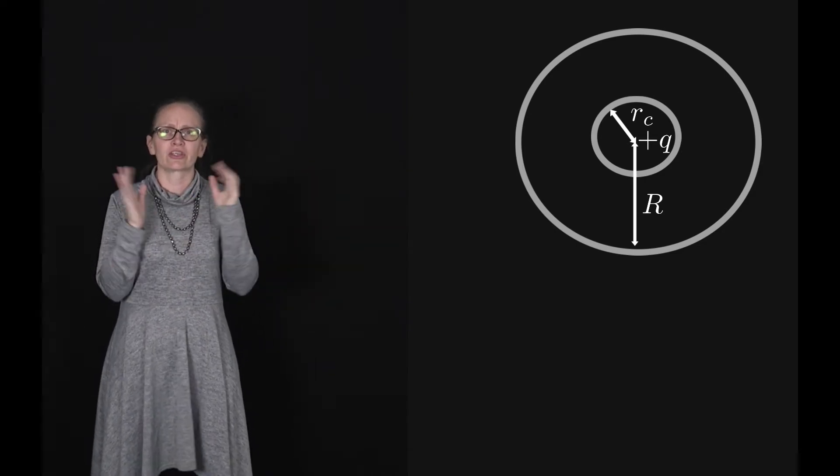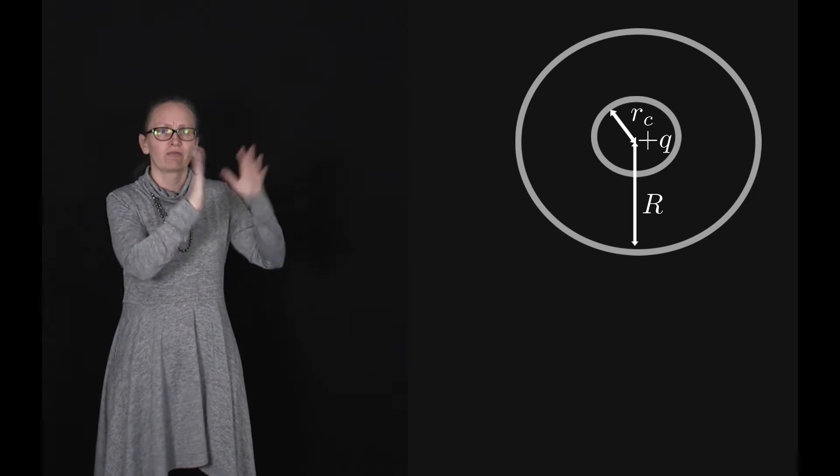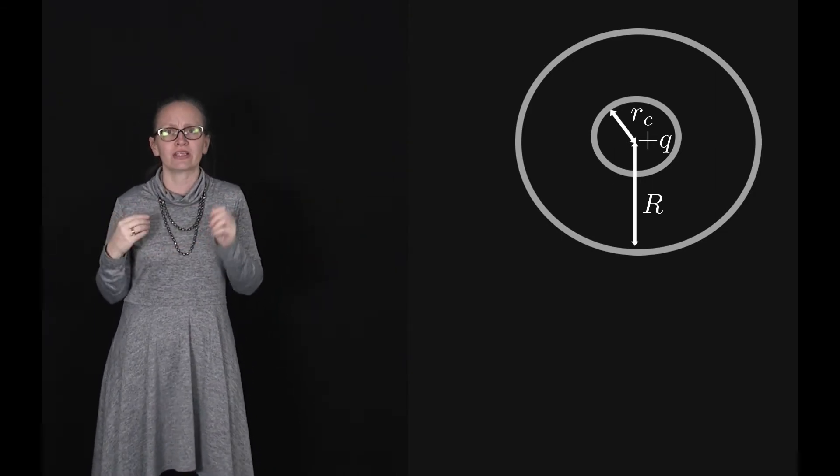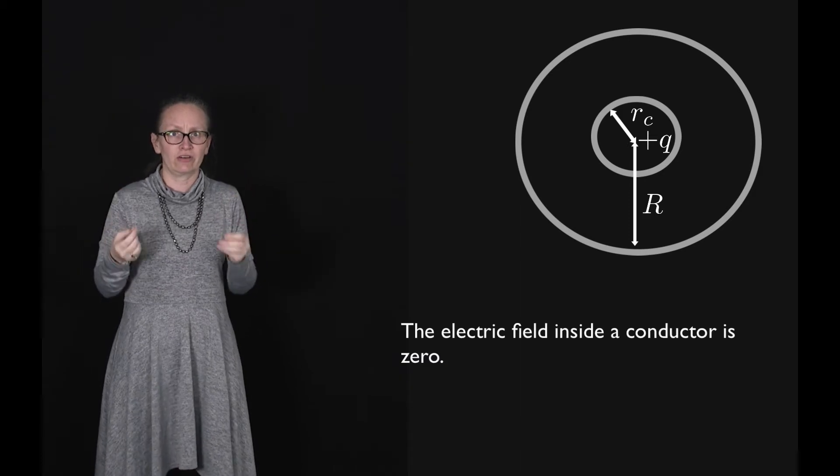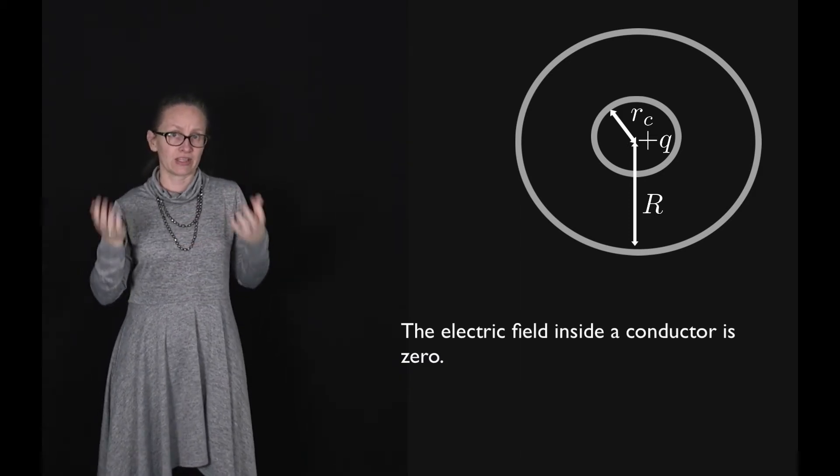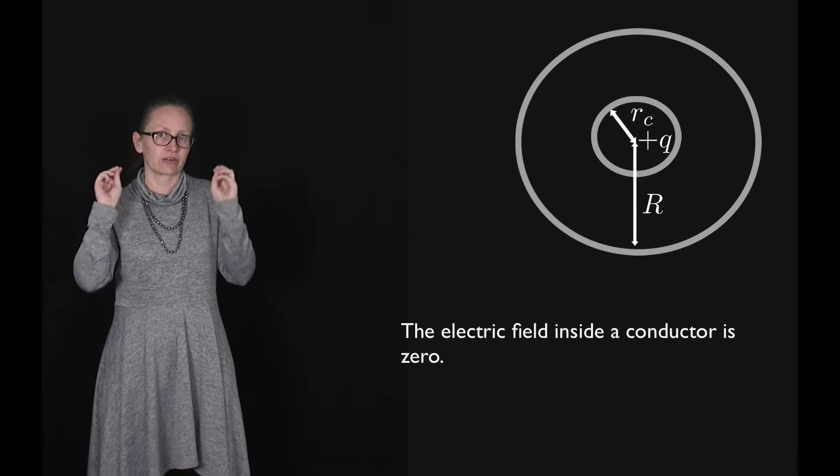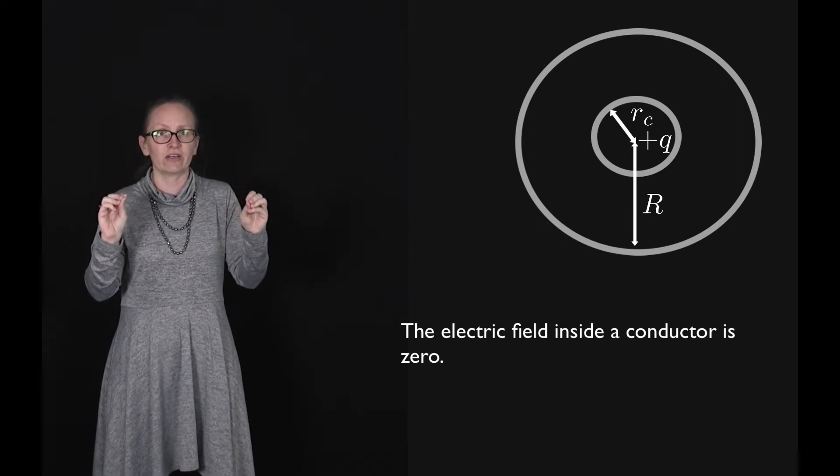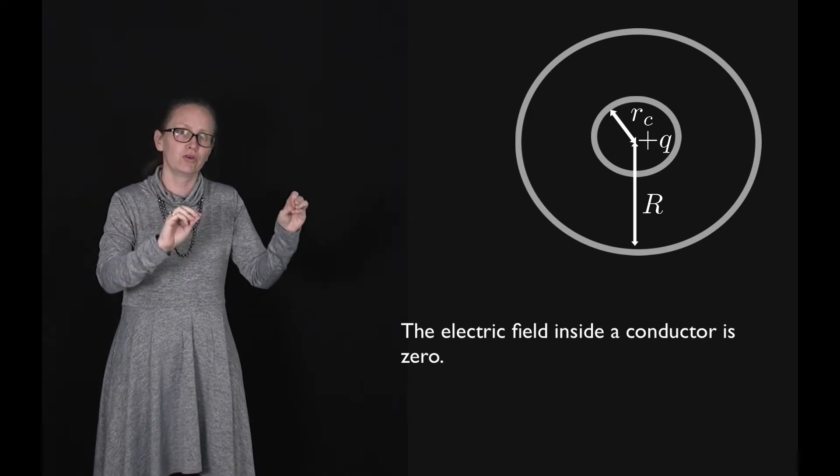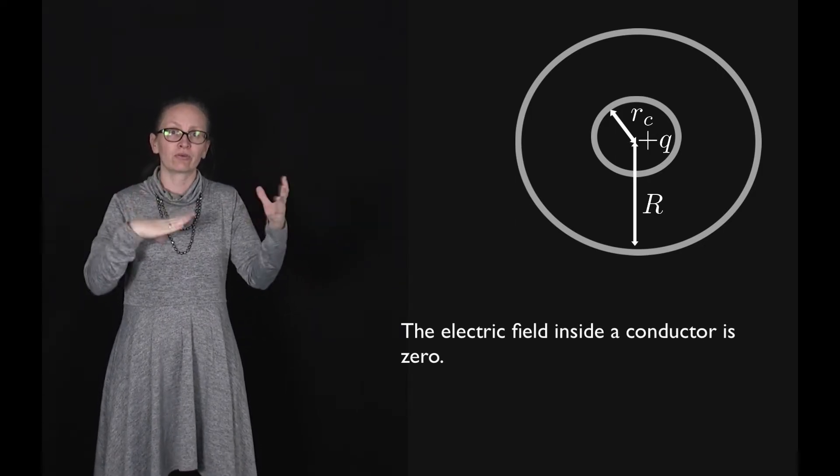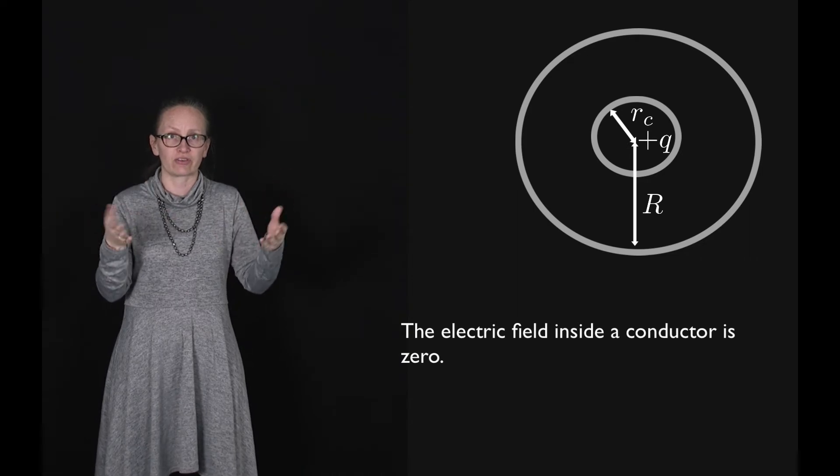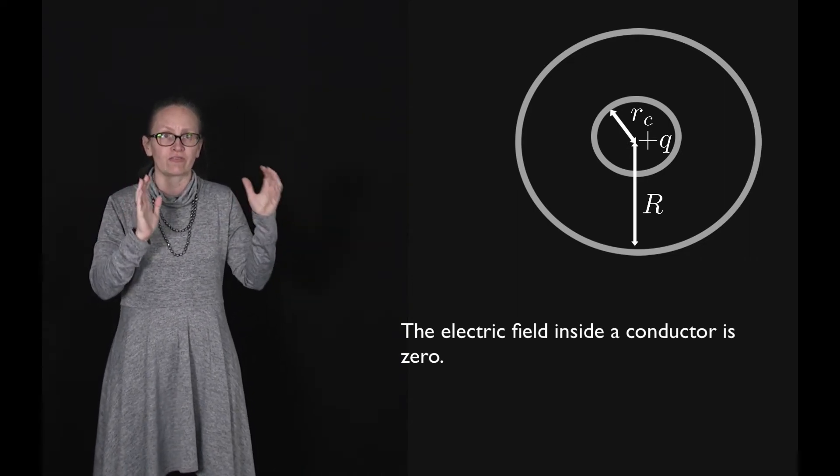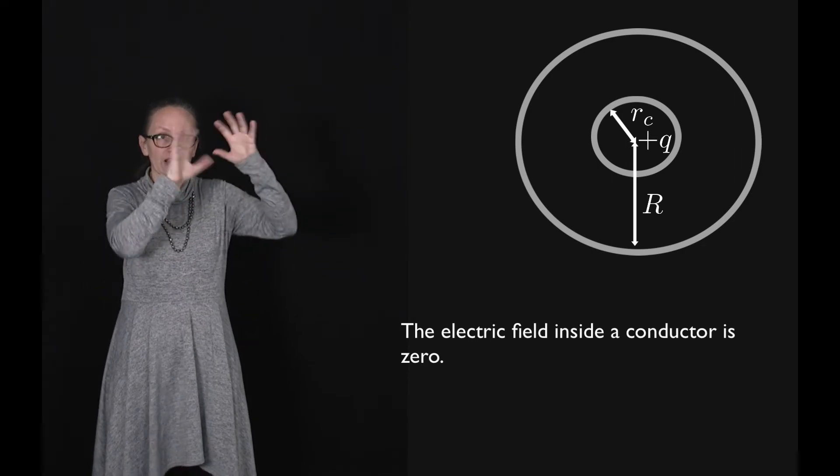Let's start by working out the charge distribution for this situation. In order to do that we need to remember that the electric field inside a conductor is equal to zero. This has to be the case because it's a conductor so it contains charge carriers. If they are in an electric field they're going to feel a force and they will move under the influence of that force until they've cancelled out the electric field and no longer feel a force.